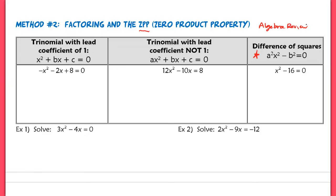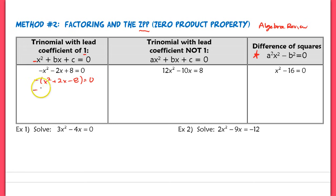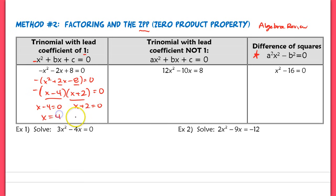Factoring with a lead coefficient of 1 means you have a positive 1 on the outside of that quadratic term. In my example, I don't have a positive 1, so I factor that out first to make this a much easier question. I'll carry down that negative — technically it's a negative 1. Then I factor by finding two numbers that multiply to negative 8 and add up to 2, giving me x minus 4 and x plus 2. Using the zero product property, I get x equals 4 and x equals negative 2. Notice that the negative on the outside does not affect my solutions.